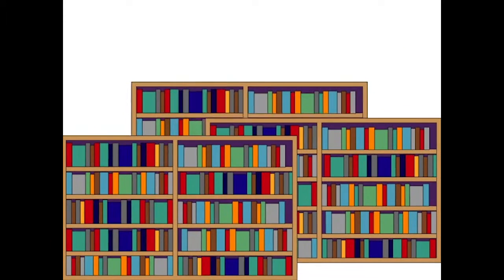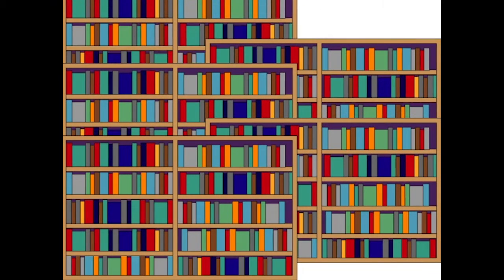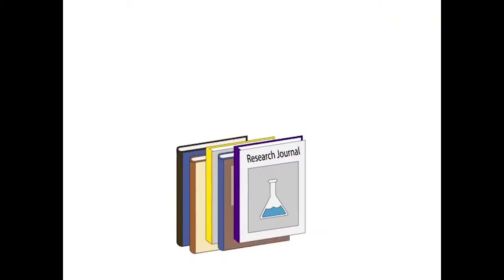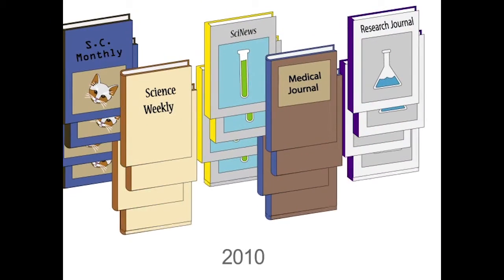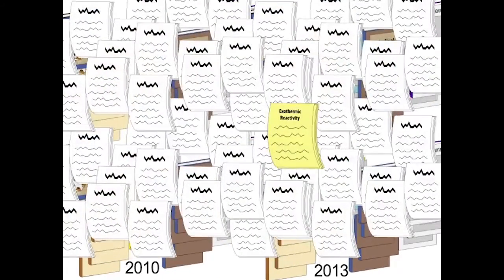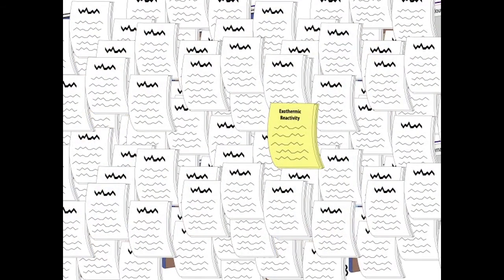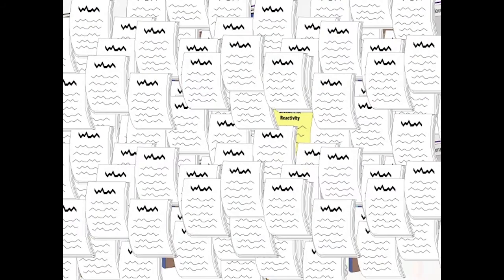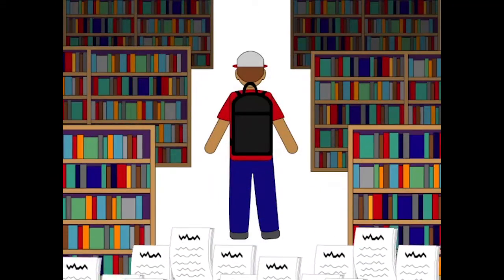The library also subscribes to hundreds or thousands of other journals. Each journal publishes several issues a year, and the library has access to many years' worth. And with several articles in each issue, this adds up to millions of articles available to the library's users.